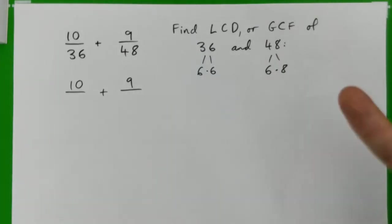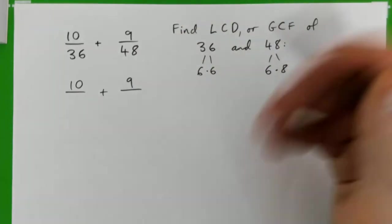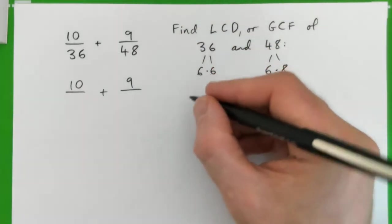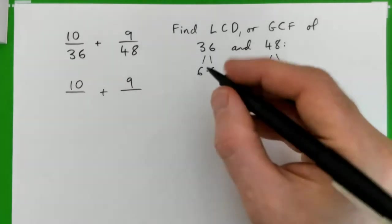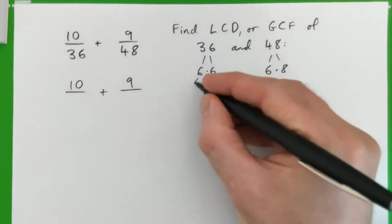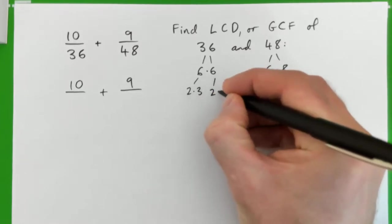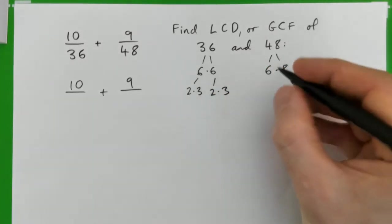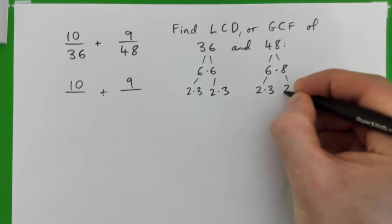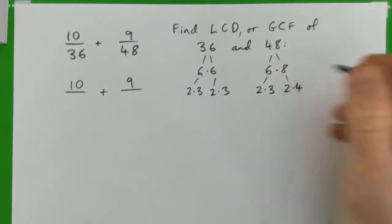So 6 goes into both, but that may not be the greatest one. So if you just break it down into the prime factors, that might help a bit. So 6 is 2 times 3, 6 is 2 times 3, and then this 6 is 2 times 3, and this 8 is 2 times 4.